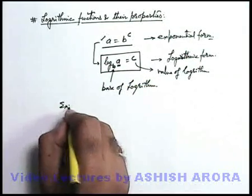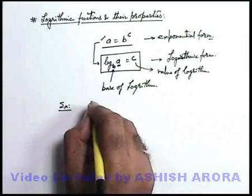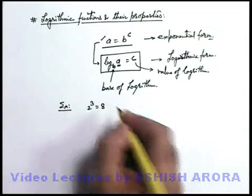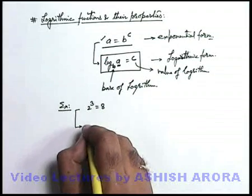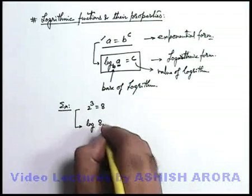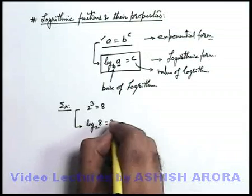For an example, all of you know two to power three can be written as eight. That means it can be written in logarithmic form as log of eight to base two is equal to three.